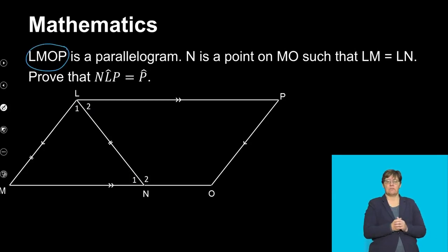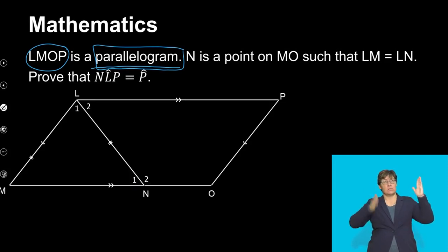So they say LMOP is a parallelogram. Now I need to immediately switch on my brain on what are the properties of a parallelogram. And then N is a point on MO such that LM is equals to LN. And then we are required to prove that. But for now we don't want to focus much on the proving.